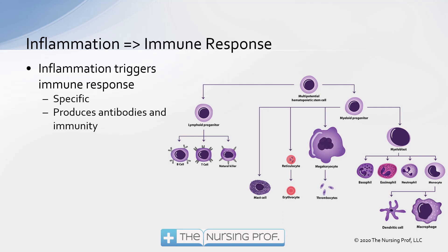Once that invader gets into the body and we trigger inflammation, inflammation itself will trigger the immune response. So if there are specific antibodies already produced, they will be mobilized. And if we don't have antibodies to this particular invader, the immune response will start to develop them, and then we will have long-term immunity. So first we have the barriers — the skin and secretions. Then we have inflammation, which tries to get rid of whatever the invader is. And then we trigger the immune response.